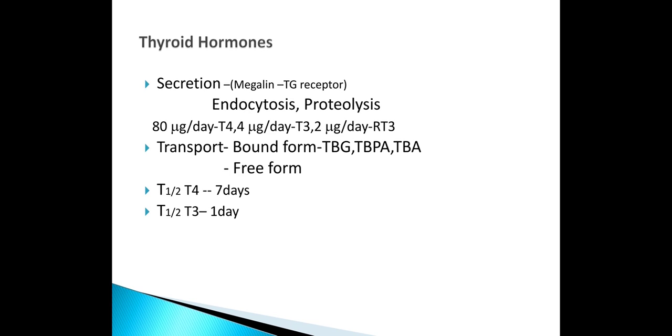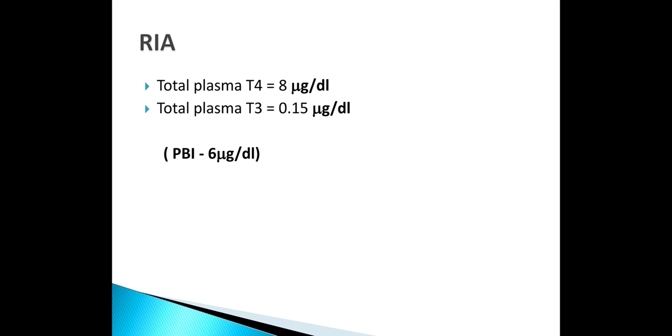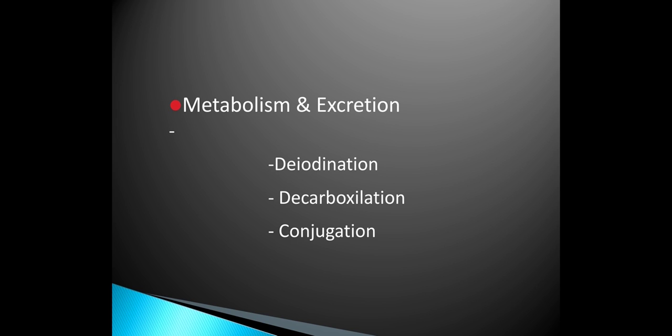Biologically active is T3. In plasma, T4 is around 8 micrograms and T3 is 0.15 micrograms. The plasma bound iodine is 6 micrograms per deciliter. They are metabolized by deiodination in the liver and kidney. One third of the circulating T4 is converted to T3; 45% is converted to T3. Metabolism is mainly by deiodination, decarboxylation, and deconjugation.